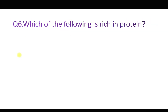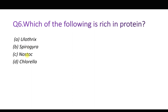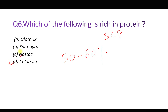Question number six: Which of the following is rich in protein? Options: A: Ulothrix, B: Spirogyra, C: Nostoc, and D: Chlorella. Some algae are very rich in protein and are cultivated as SCP — single cell protein. Among these, Chlorella is cultivated as single cell protein. It has around 50 to 60% protein and also contains all 9 essential amino acids. In addition, it also has vitamin B12. So the correct answer is D, Chlorella.